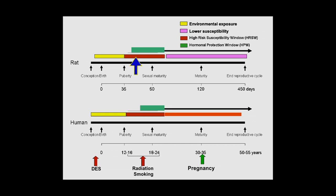You see here in the rat that there is a red area that is the highest susceptibility window — that is when the animals are going from 35 to 55 to 60 days of age. In humans, of course, that corresponds to between 12 and 24 years of age. This area is when the animal is highly susceptible to develop breast cancer, especially when inoculated with NMU or methylnitrosourea. When the animal gets older, the susceptibility decreases, shown by the pink line.